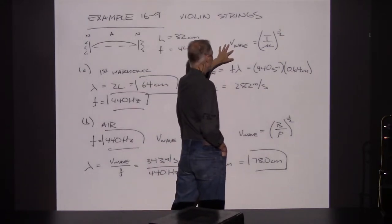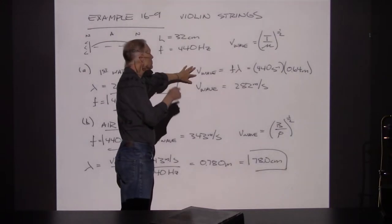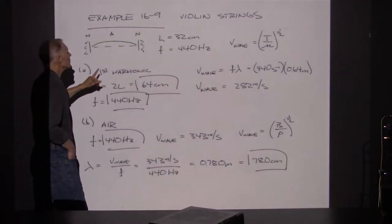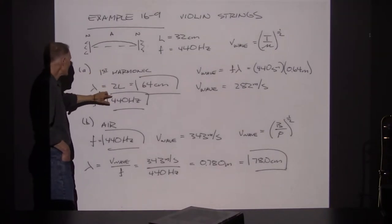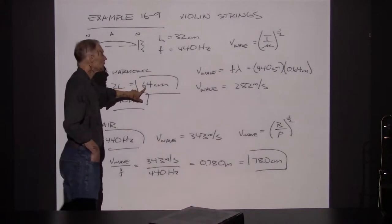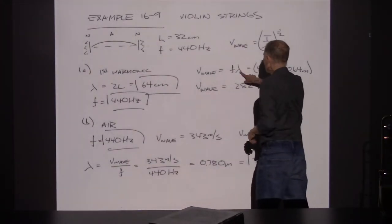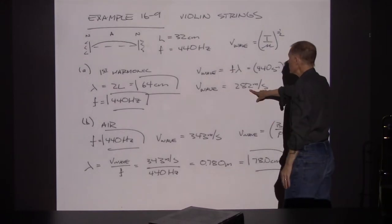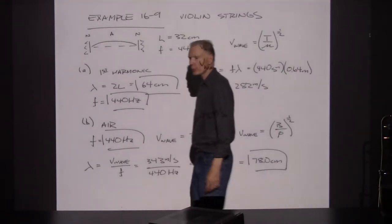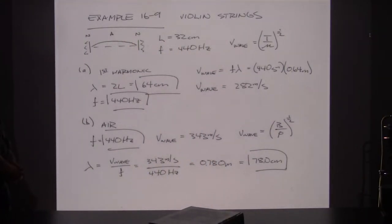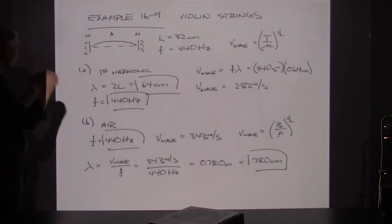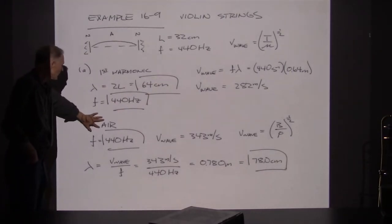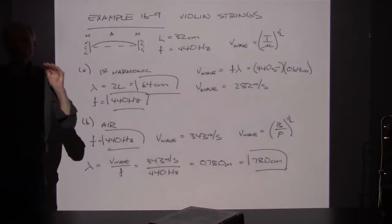The wave speed for this string can be calculated by taking frequency times wavelength. They've told us the length is 32 cm and it's the first harmonic, so the wavelength is 64 centimeters. Taking the frequency and the wavelength together, we can determine the wave speed on this string, which turns out to be 282 meters per second. So we've determined what the wave speed must be when this is properly tuned.